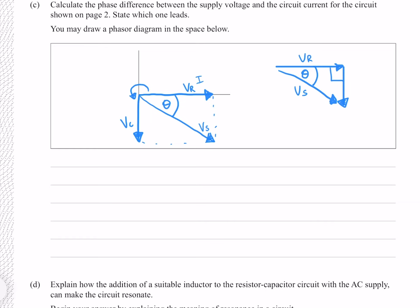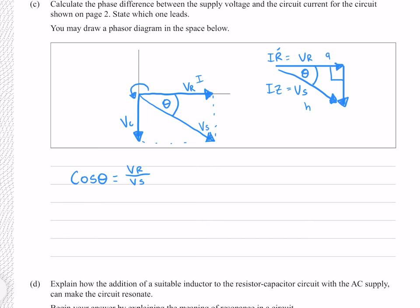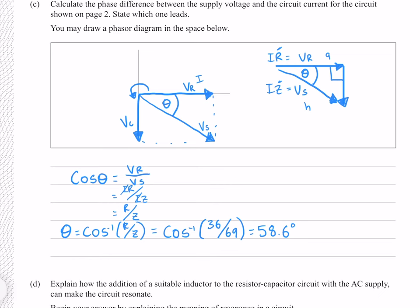VR is the adjacent side and VS is the hypotenuse, so we use the cosine relationship: cos(θ) = VR over VS. We haven't found VR directly, but VR equals IR and VS equals IZ, so making this substitution the current cancels out, giving cos(θ) = R over Z. Taking the inverse cosine and putting in our numbers gives 58.6 degrees to 3 significant figures, so the current leads by 58.6 degrees.